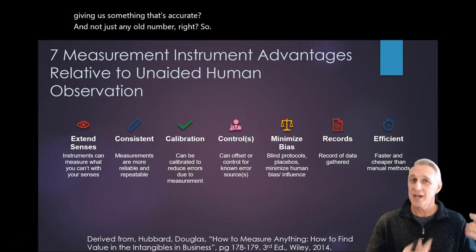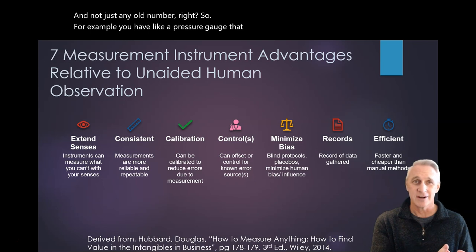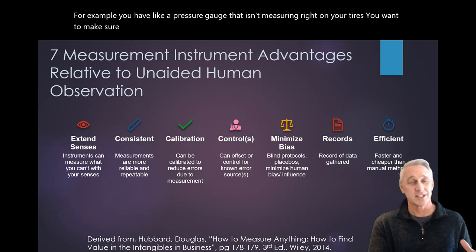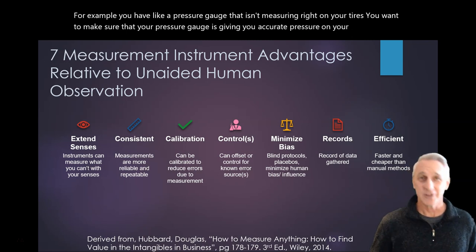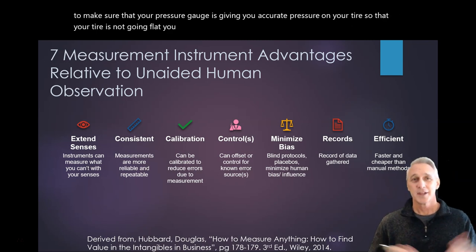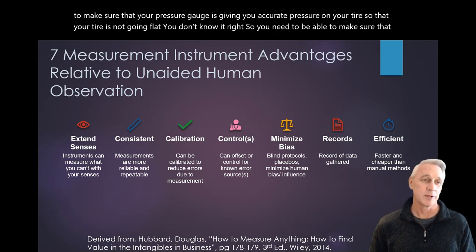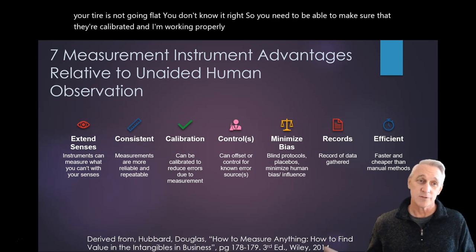For example, you have like a pressure gauge that isn't measuring right on your tires. You want to make sure that your pressure gauge is giving you accurate pressure on your tire so that your tire is not going flat. You don't know it, right? So you need to be able to make sure that they're calibrated and working properly. And sometimes this is something you have to repeat.